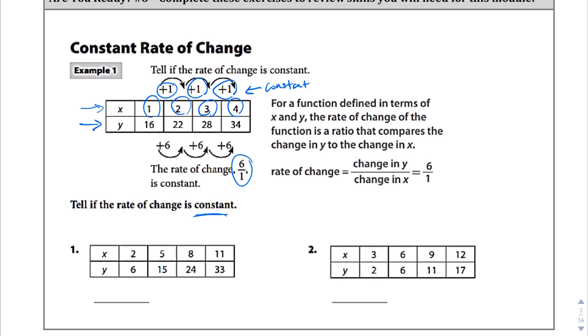And we have to see if that's the same for the y. If it's not the same for the x or the y, then we can't say that it's constant. And sure enough, if we look at the y values, from 16 to 22, we're going up by 6. From 22 to 28, going up by 6. 28 to 34, going up by 6. So that is also constant, so we say the rate of change is constant.